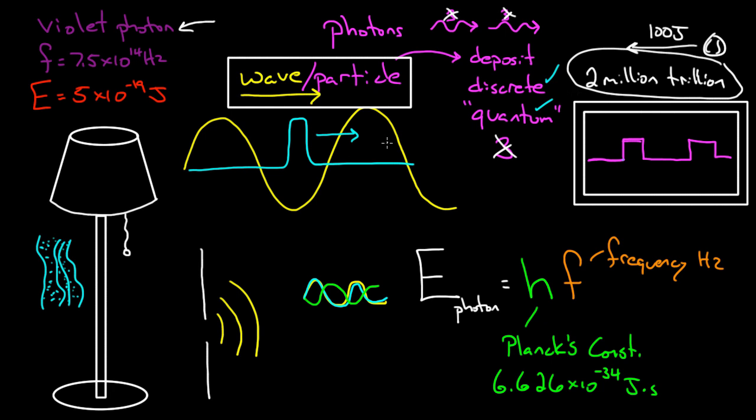For all intents and purposes, for all we care, if you look at a macroscopic level, light's basically continuous. It can deposit any energy whatsoever because the scale's so small here. But if you look at it up close, light can only deposit discrete amounts.